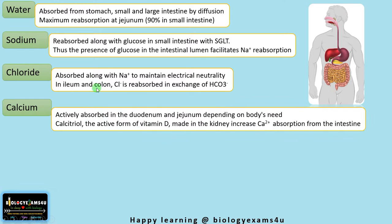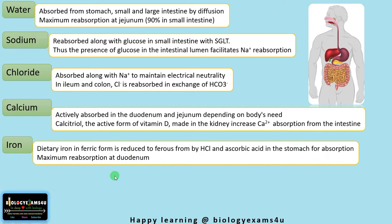Regarding calcium: calcium is actively absorbed in the duodenum and jejunum depending on the body's needs. Calcitriol, which is the active form of vitamin D made in the kidney, increases calcium absorption from the intestine. The next is iron, an important component of hemoglobin and myoglobin. Dietary iron is in ferric form and must be reduced to ferrous form by hydrochloric acid and ascorbic acid in the stomach for absorption. Maximum absorption of iron takes place in the duodenum.